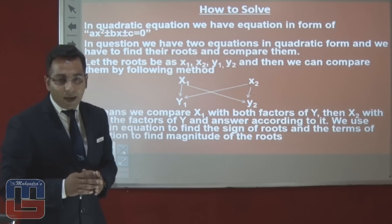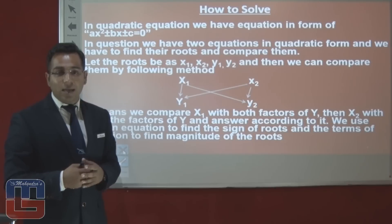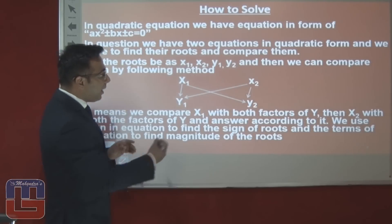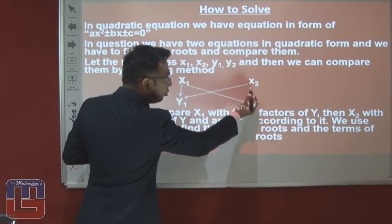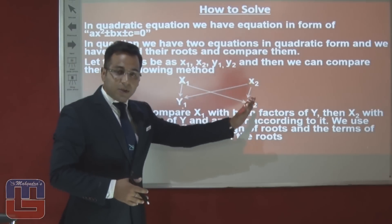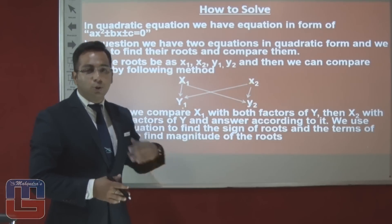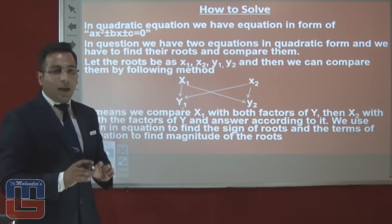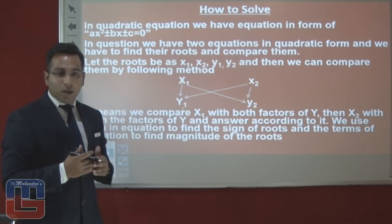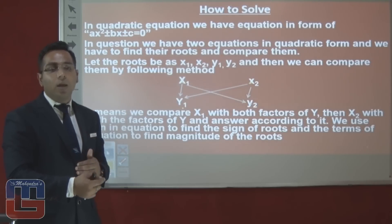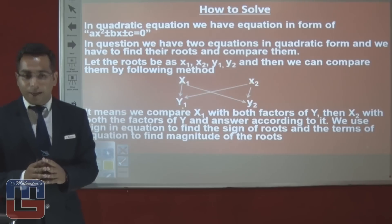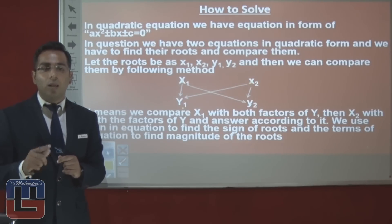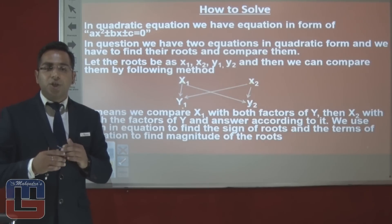While comparing, we compare the roots of x with both roots of y, and both roots of y with x. We do not compare x roots with each other, or y roots with each other. That is, we compare x1 with y1, x1 with y2, x2 with y1, and x2 with y2 — but never x1 with x2, or y1 with y2. We find whether the roots are greater, equal, greater than or equal to, or the relationship cannot be determined.